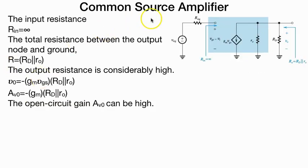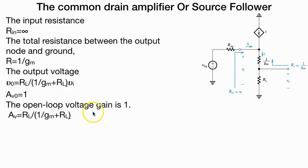Now this is a common source amplifier. The source is common, RD is connected, R-naught is parallel. So AV-naught is minus GM and RD is parallel to R-naught. This is a common drain.